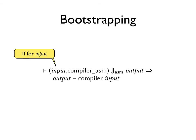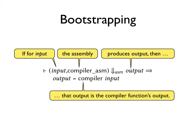Let's have a look at what the bootstrap theorem says. If, for input, the assembly produces some output called output, then that output is the compiler function's output. In other words, the assembly implementation of the compiler, that is compiler-asm, behaves like the compiler function.